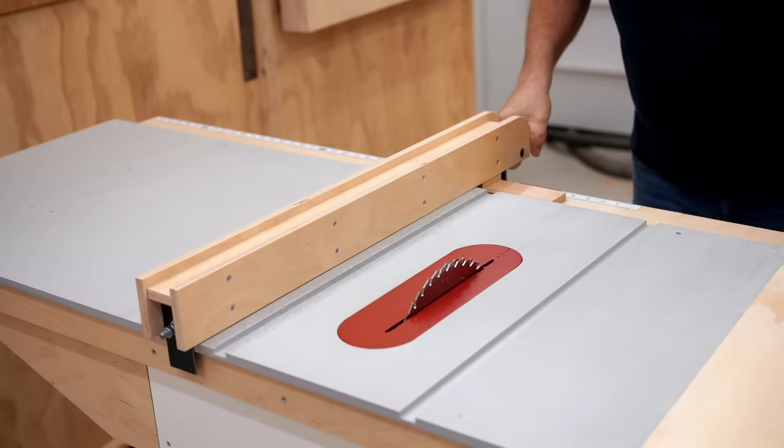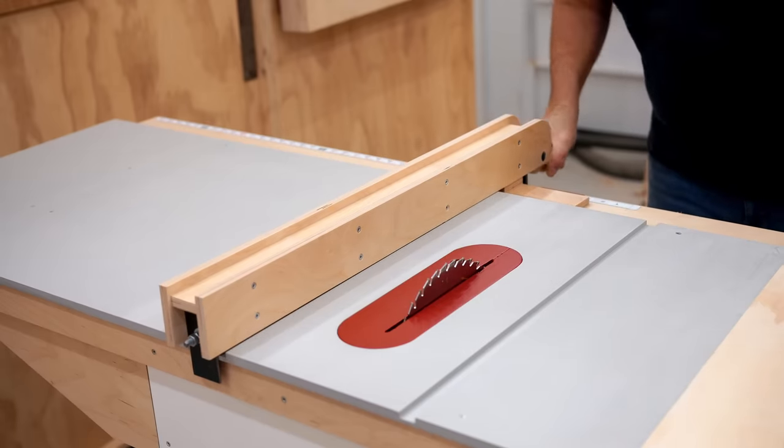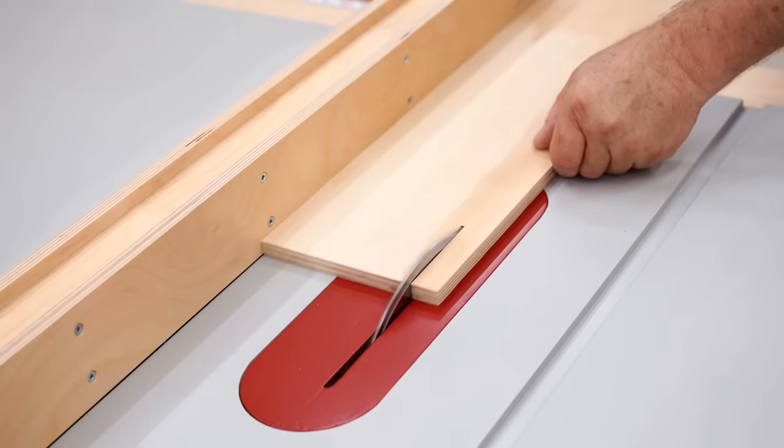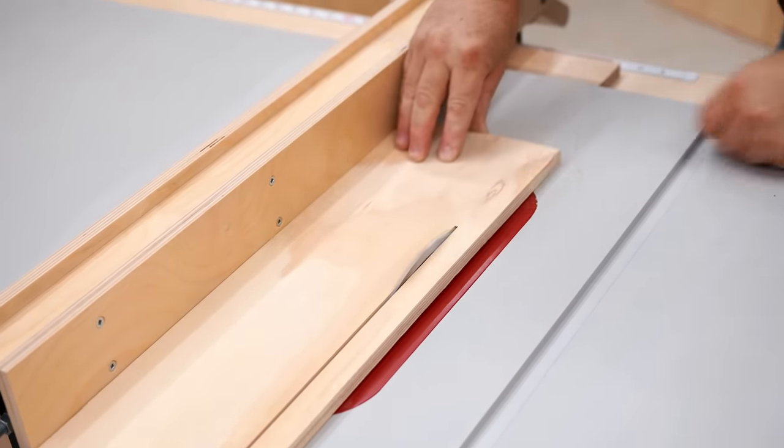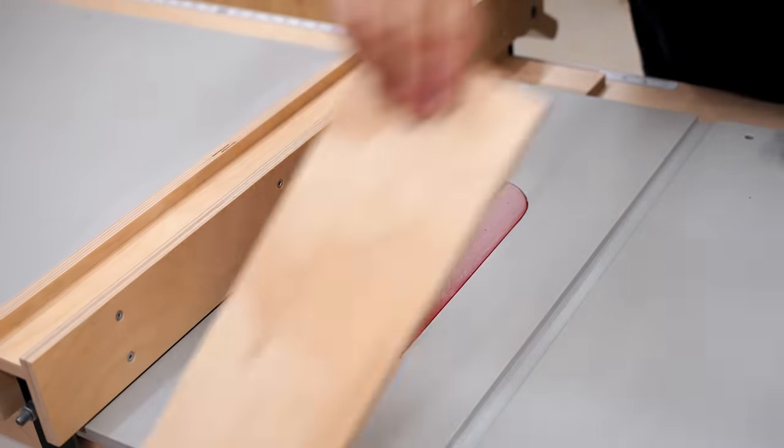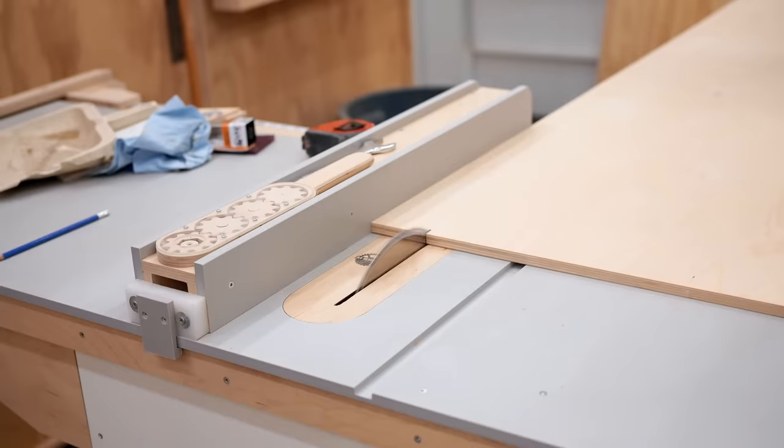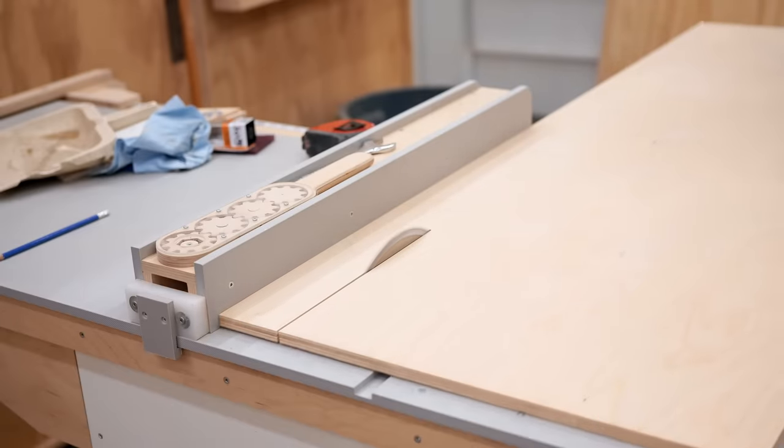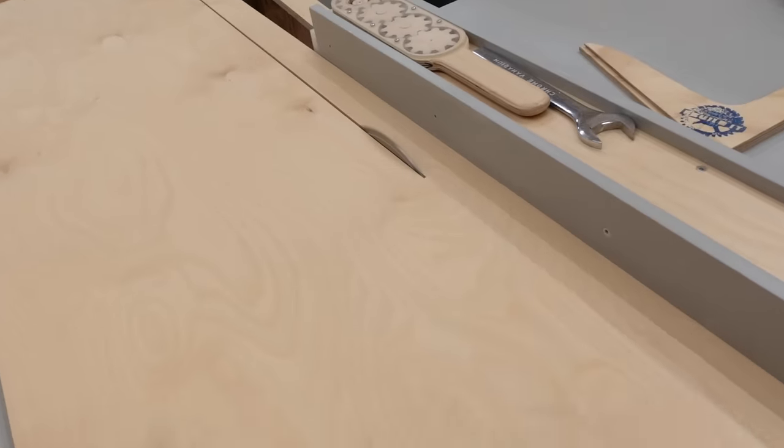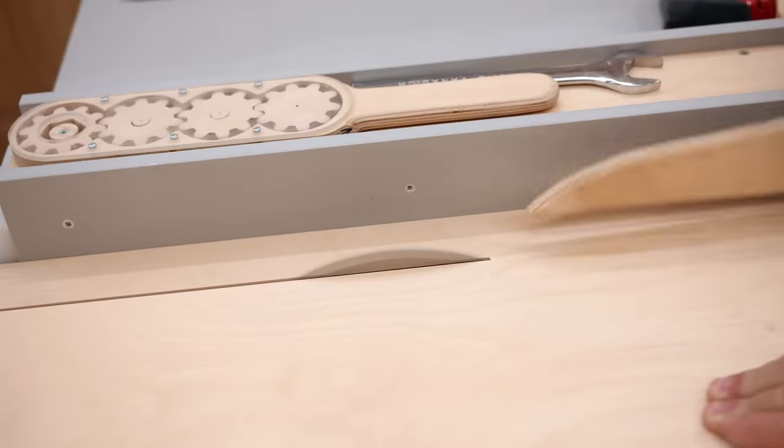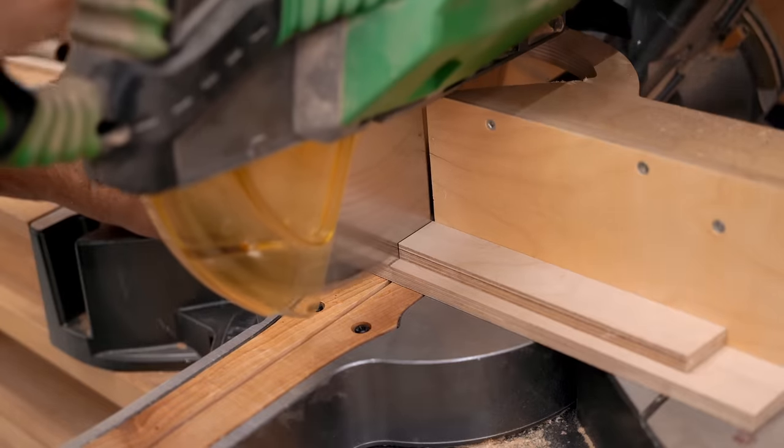This project is made almost completely from half inch plywood and I'm going to start by cutting out the parts for the fence rail. I want to get that put together and put on the saw before I do anything else.